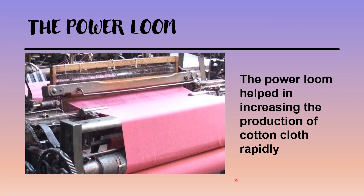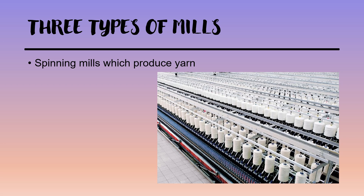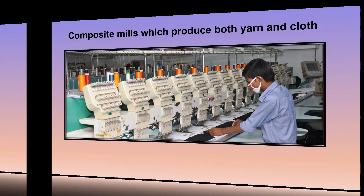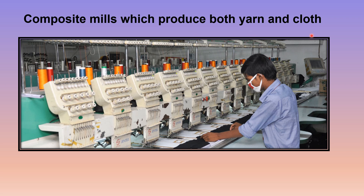When the power loom came into use, it increased the production of cotton cloth rapidly. Today we have three types of mills: spinning mills which produce yarn or thread; weaving mills, where the thread produced in spinning mills is used for weaving cloth; and composite mills which produce both yarn and cloth.